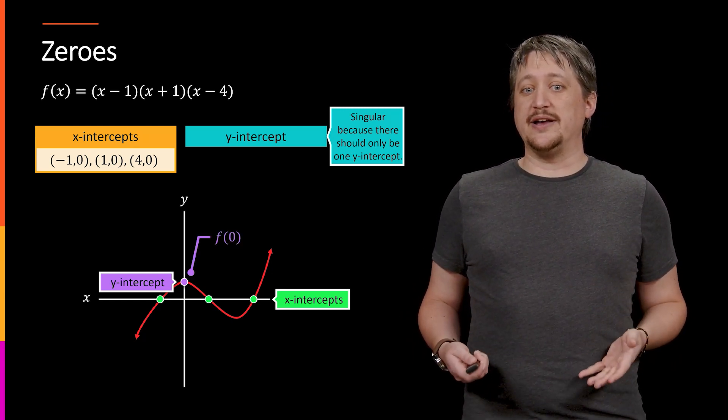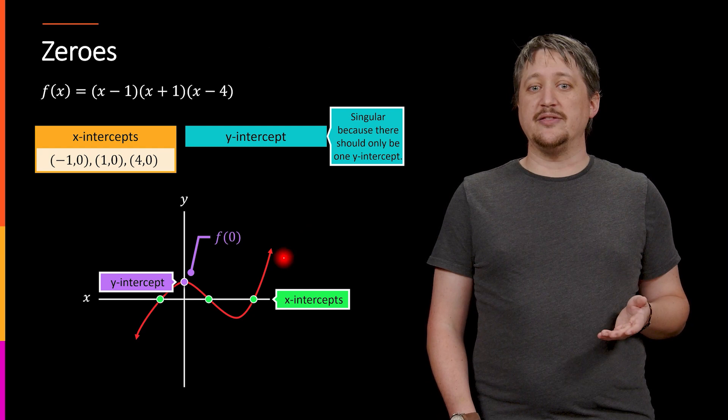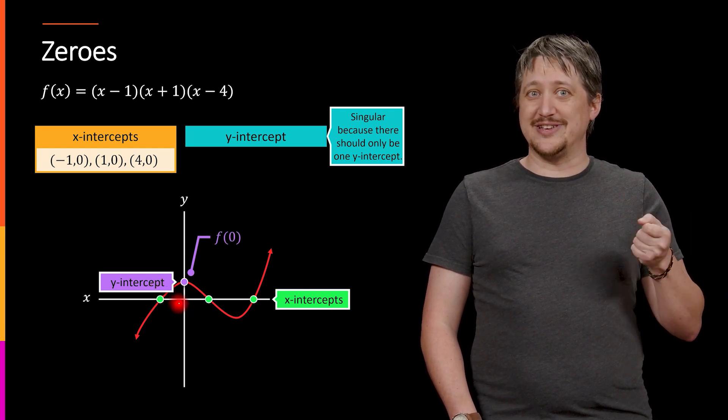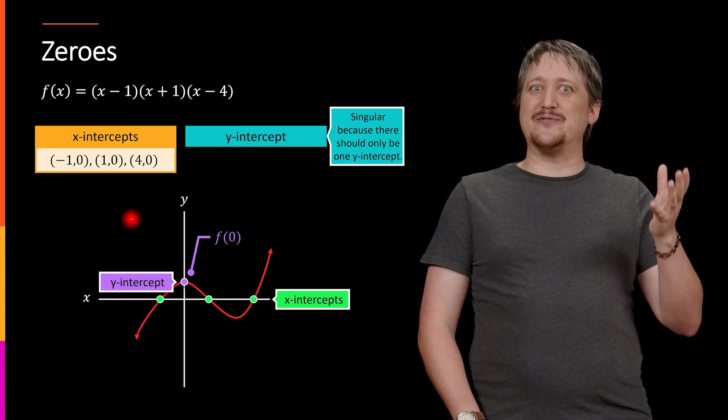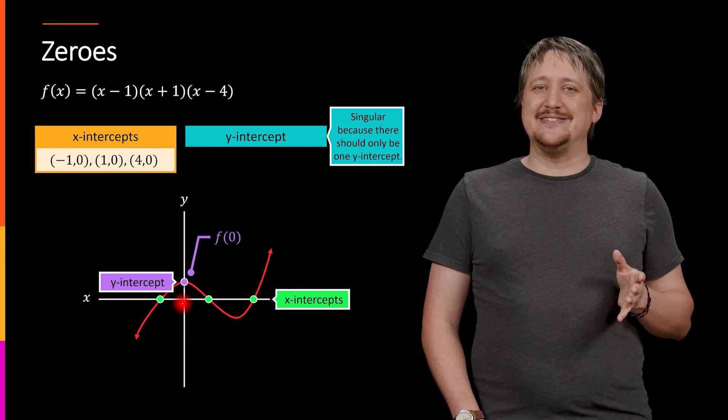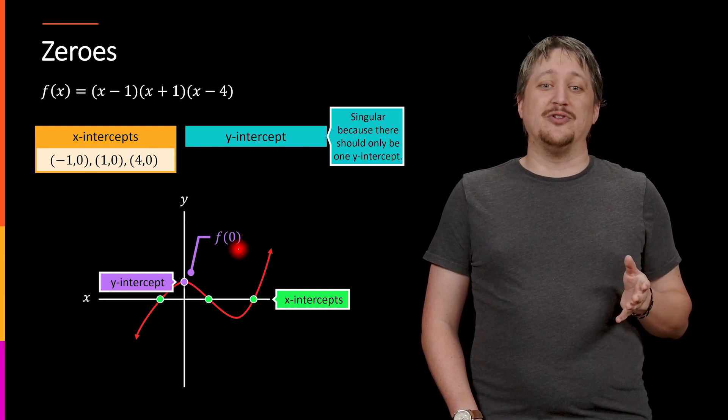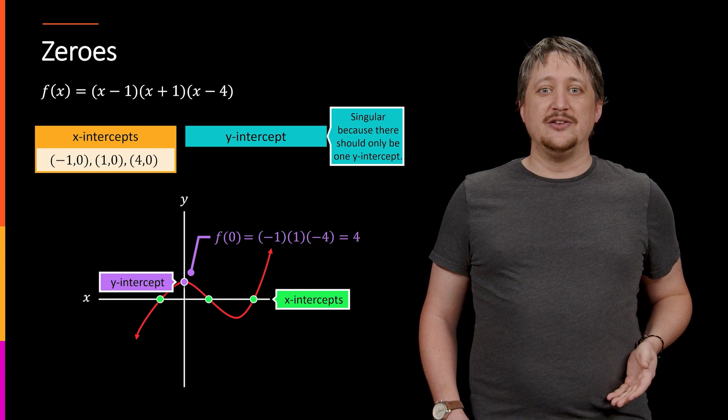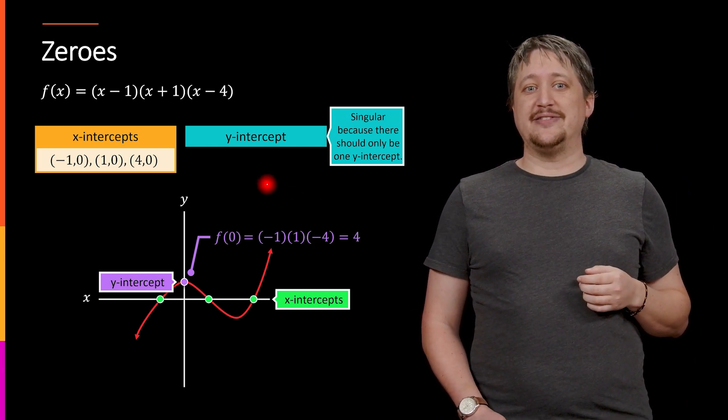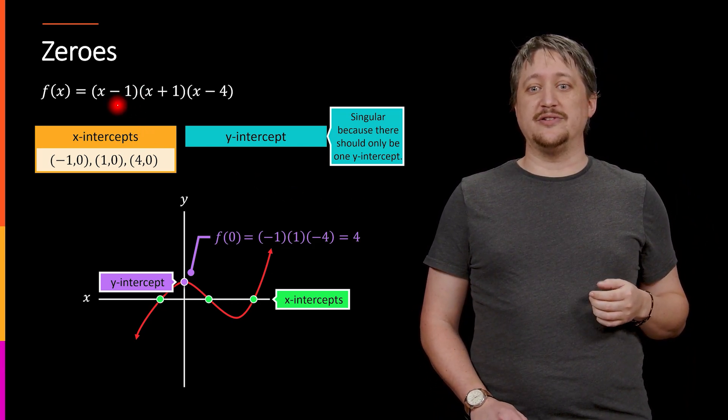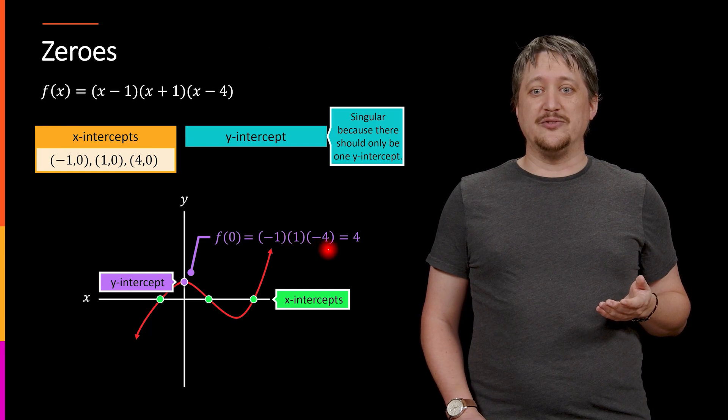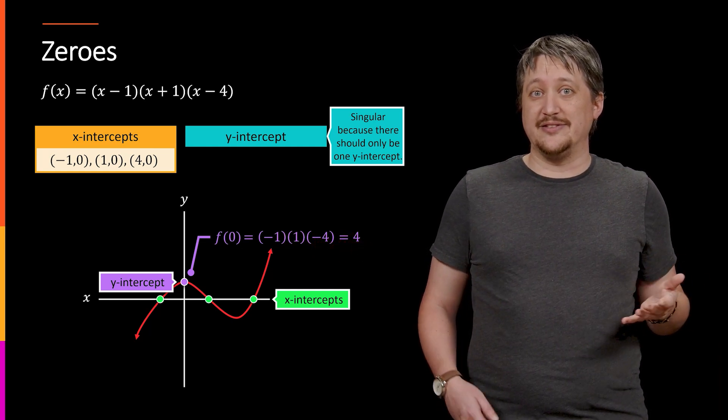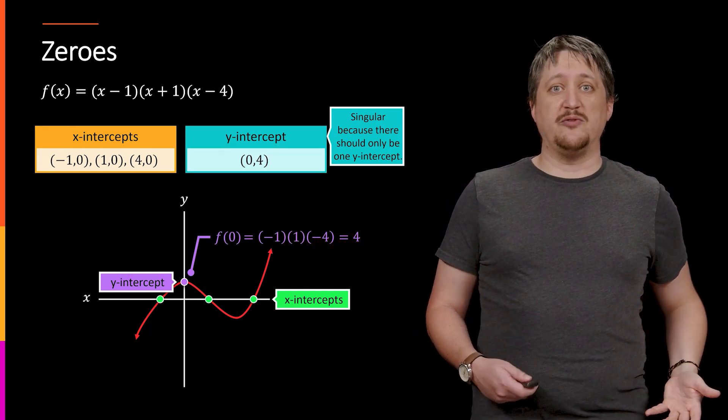Likewise, same with the y-intercept. The y-intercept is where I'm hitting the y-axis. I know I'm beating a dead horse, but weirdly this is one of those things where we spend a lot of time talking about x-intercepts and people forget the y-intercept. The nice thing is that we can calculate it, we just have to plug in zero into the function. So if we do that, zero minus one is negative one, zero plus one is one, zero minus four is negative four, multiply those together we get four. So our y-intercept is zero comma four.